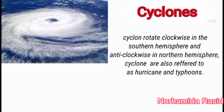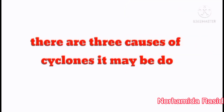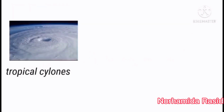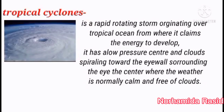Cyclones rotate clockwise in the southern hemisphere and anticlockwise in the northern hemisphere. Cyclones are also referred to as hurricanes and typhoons. There are three causes of cyclones: tropical cyclones, extra-tropical cyclones, and cyclone intensity. A tropical cyclone is a rapidly rotating storm originating over tropical oceans, with a low-pressure center and clouds spiraling toward the eye, where the weather is normally calm and free of clouds.